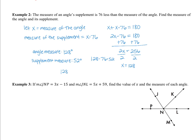Check to make sure: 128 plus 52 is 180. Another way is to take 180 minus 128 to get the supplement, but then you would need to plug it back into the expression x minus 76 to verify. That's how you do it when given just information about an angle and its supplement — just like the first example.